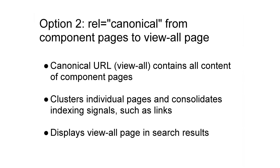You also have a second option: to use rel canonical to explicitly hint to Google what your view-all page is. While we try to detect it algorithmically, you can also tell us by writing rel canonical on your component pages pointing to your view-all version. This is a more explicit hint to us about how your site is configured. With rel canonical, we'll consolidate the indexing properties from the component pages with the canonical version — things like links will also be transferred — and then we'll send users to the view-all page.